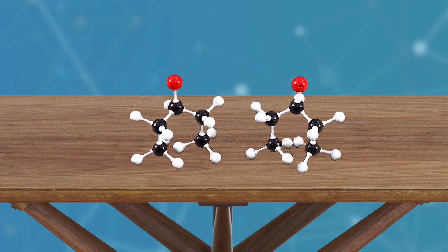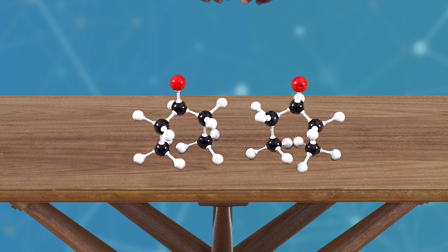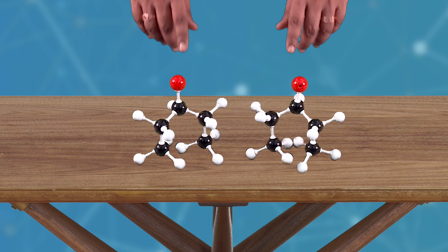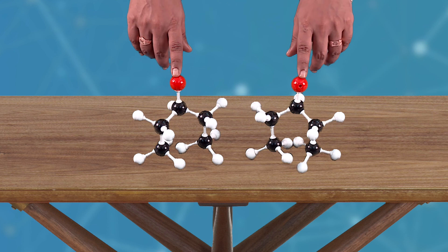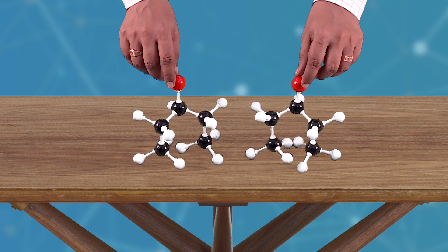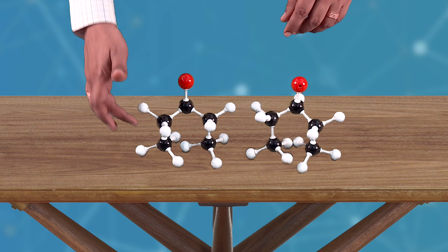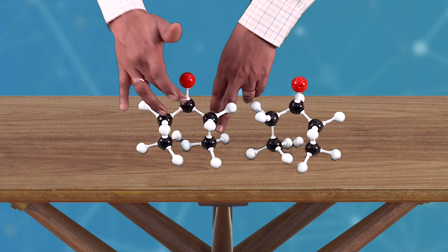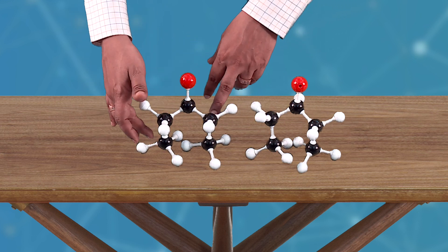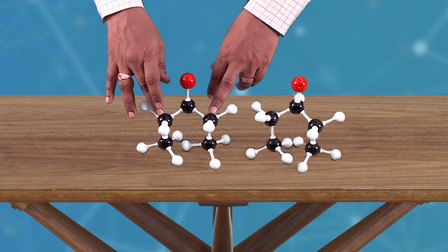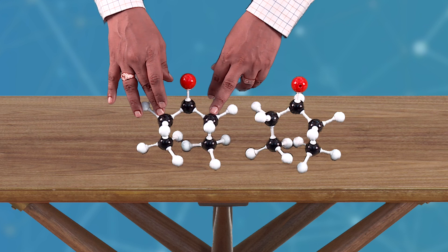Now, let us look at topicity and we will now look at what is enantiotopic phases and diastereotopic phases. First, let us look at enantiotopic phases for the same molecule. If you look at this molecule, we have 1, 2, 3, 4, 5 — 5 carbons are there. It is a pentane parent carbon.